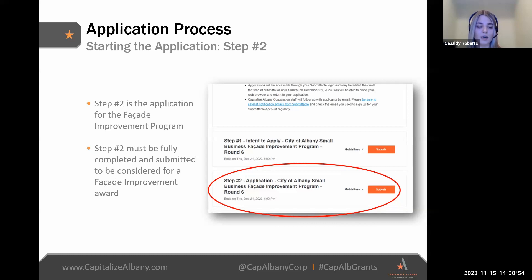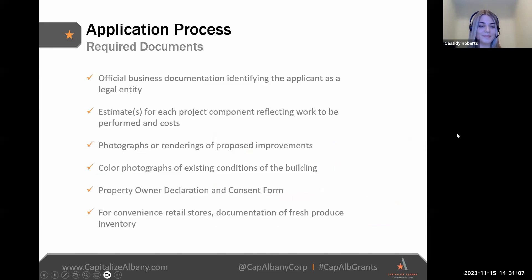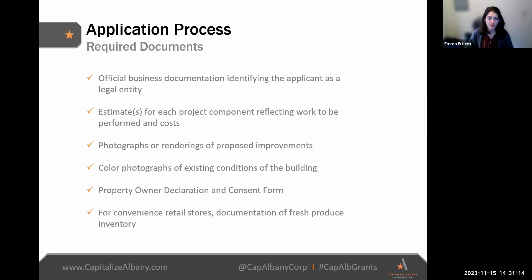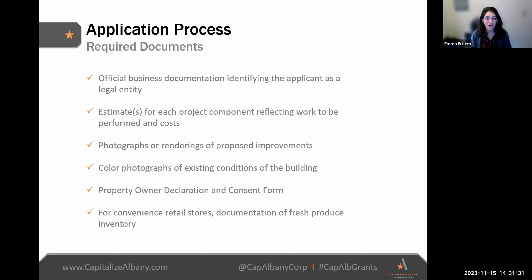After reading the program guidelines and completing Step 1, you can begin Step 2 where you'll find the full application for the Facade grant program. Because of the autosave feature, applicants can complete applications over multiple sessions — do not feel pressured to do this all in one sitting. All required questions must be answered and all required documents must be attached before completing and submitting Step 2. If you don't complete all required questions in the appropriate format and attach all required documents, the Submittable platform will not allow you to turn in your grant application.